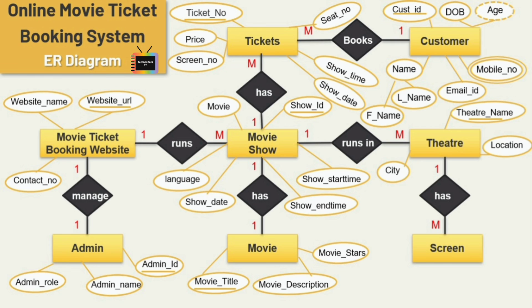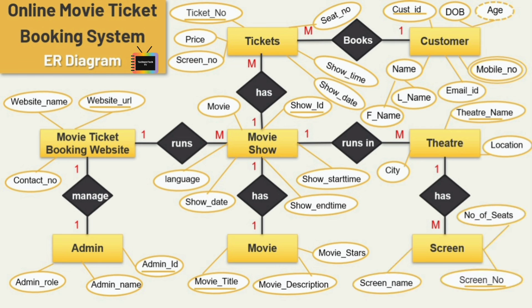Finally, for the screens entity, I have added three attributes: screen number, screen name, and number of seats. This is how you can draw an ER diagram on different topics — this is just an example, and you can add various entities and different attributes according to your requirements.